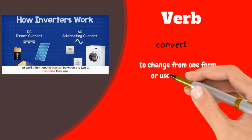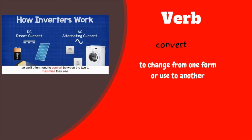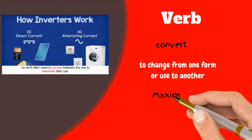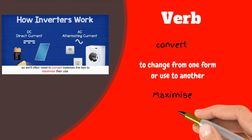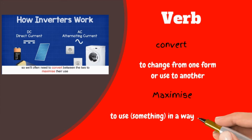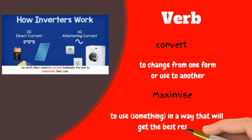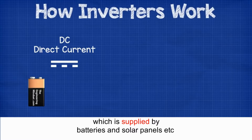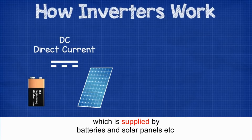Transitions: to change from one form or use to another. Maximize: to use something in a way that will get the best result. These are applied by batteries and solar panels, etc.